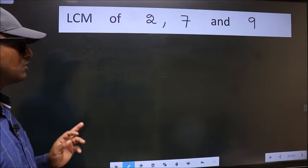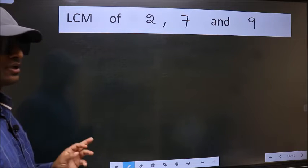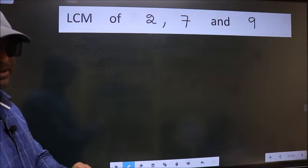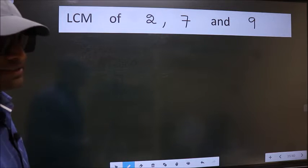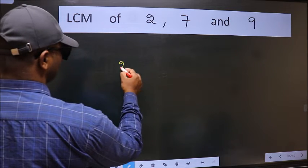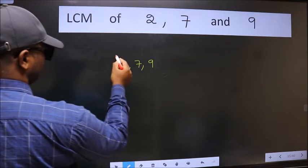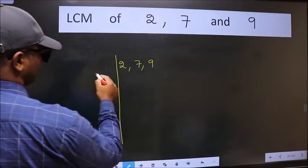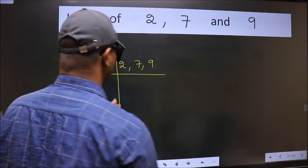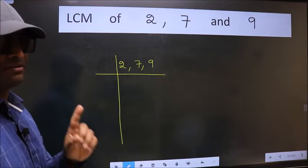LCM of 2, 7, and 9. To find this LCM we should frame it in this way: write down 2, 7, and 9. This is your step 1.